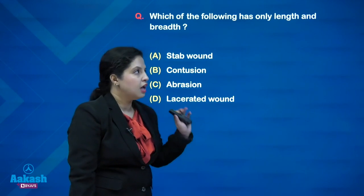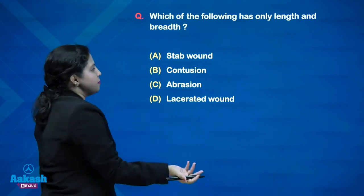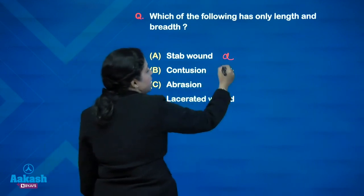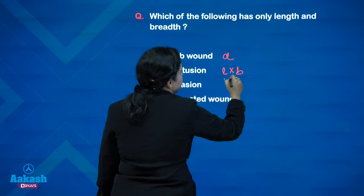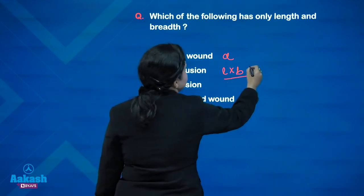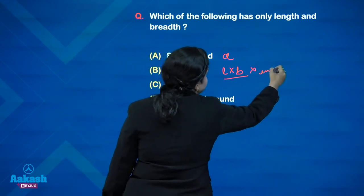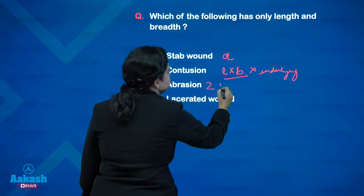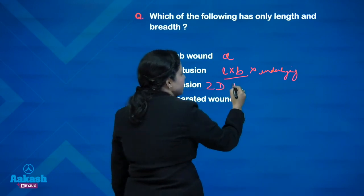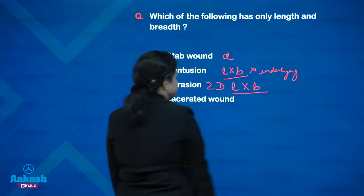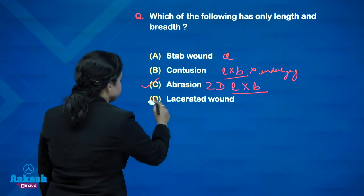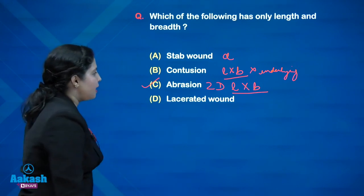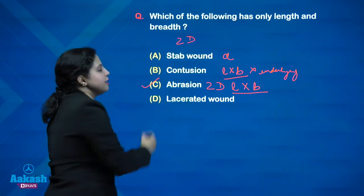Moving on to questions. Which of the following has only length and breadth? A stab wound has depth. A contusion has length and breadth but also underlying depth. Abrasion — yes, that is the correct answer. It is a two-dimensional injury where there is length and breadth and no depth. A lacerated wound again has depth. So the answer to the question of which injury has only length and breadth is abrasion — the only two-dimensional injury.